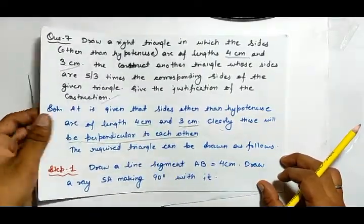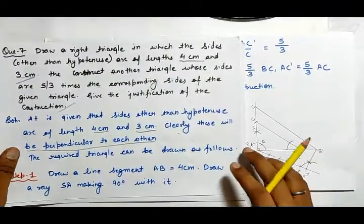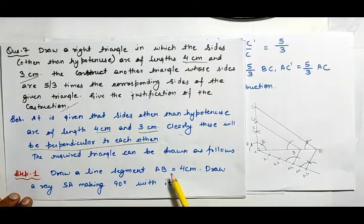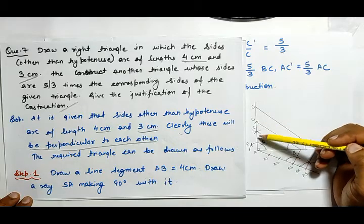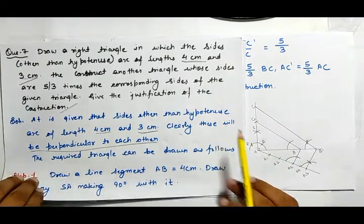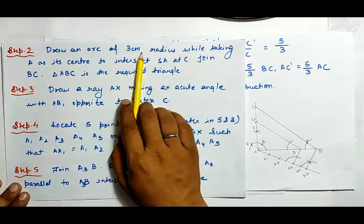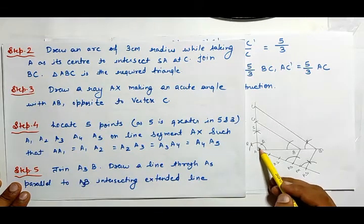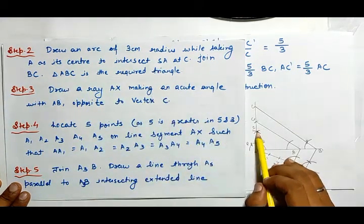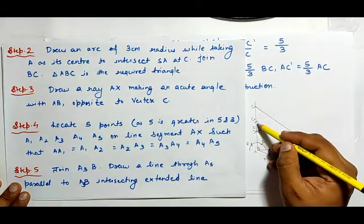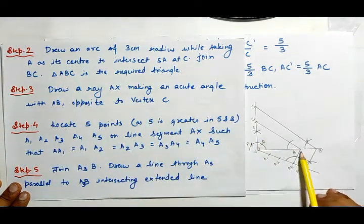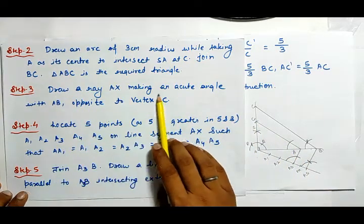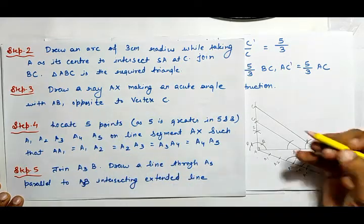Let me show you the diagram for question number 7. Step 1: draw a line segment AB equal to 4 centimeters. Draw a ray SA making 90 degrees with AB. Step 2: draw an arc of 3 centimeter radius taking A as center to intersect SA at C. Join BC — triangle ABC is the required triangle.